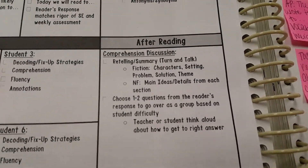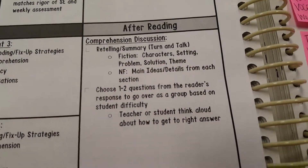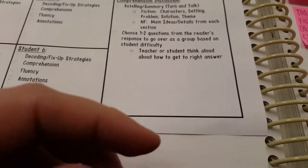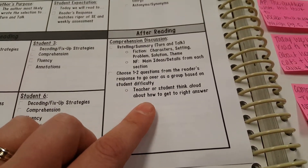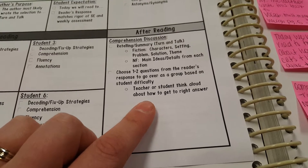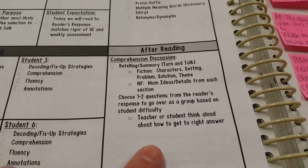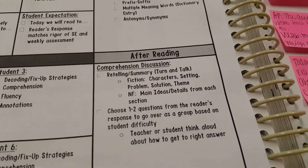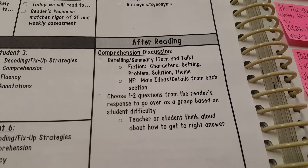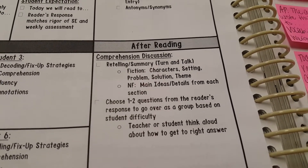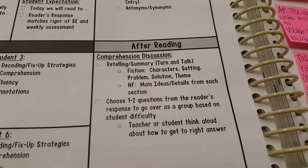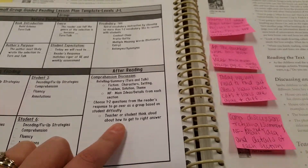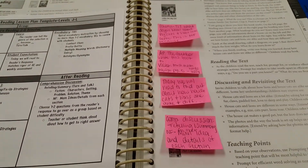If you do have questions prepared ahead of time, sometimes students have trouble with some of them. So it's a good idea to choose one or two of the questions from your reader's response to go over as a group, based on which ones they had the most difficulty with. It's always good to do a teacher think-aloud and incorporate the students' thoughts about how to get the right answer.